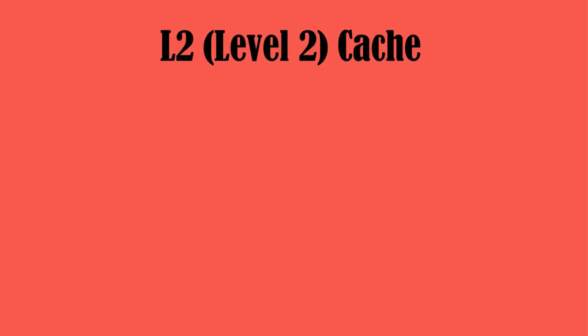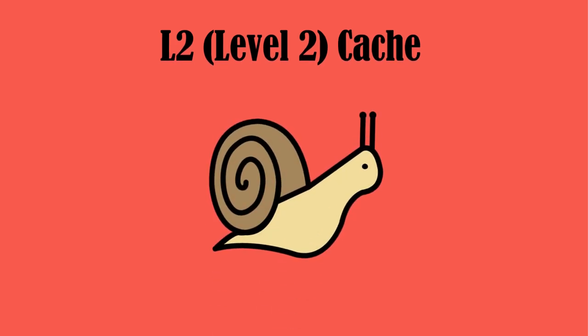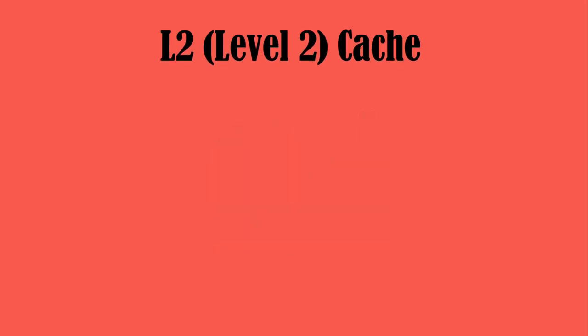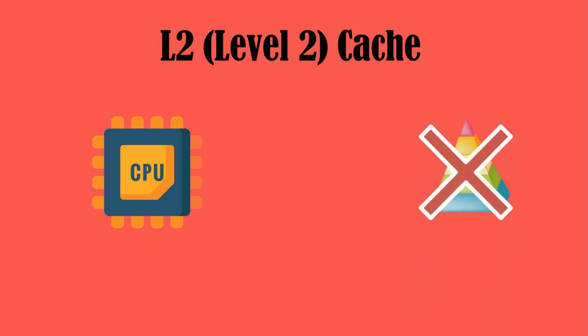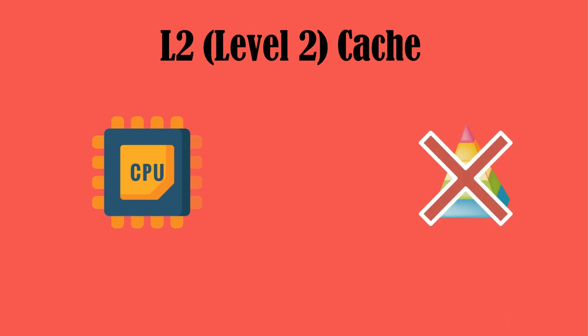The L2 or level 2 cache is slower than the L1 cache, but it's larger in size. When the processor doesn't find any specific data in the L1 cache, it goes for the L2 cache.